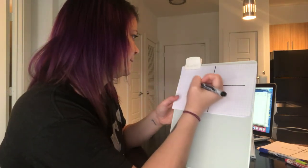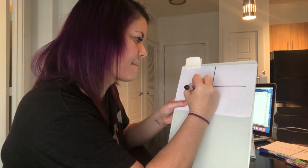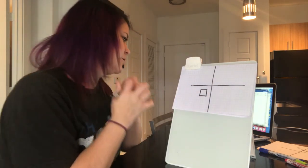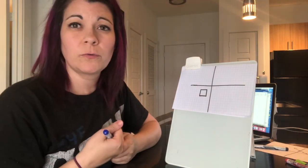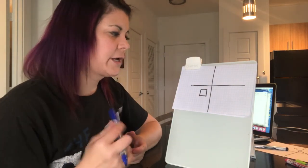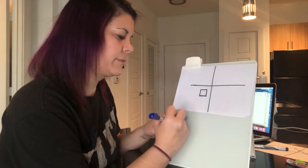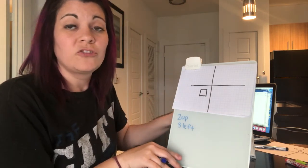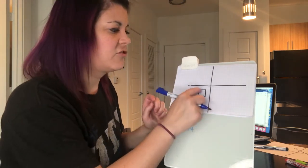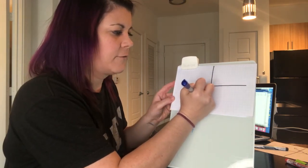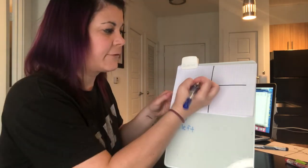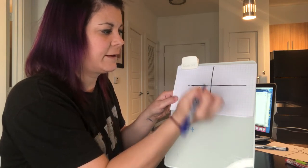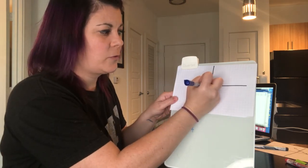I'm going to draw a three-by-three square. I want to translate this two up and three left. That means I take each of the four vertices and move them two up and three left — so I go two up: one, two; and three left: one, two, three — and I draw that vertex.